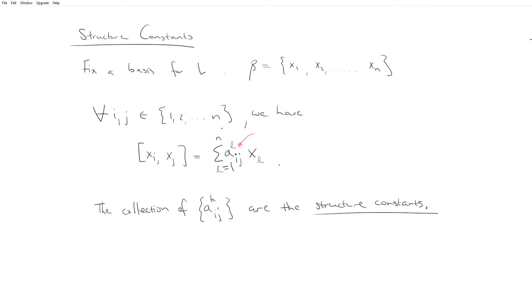So if we have a Lie Algebra L, then we can fix a basis for it, say beta equals x1, x2, dot dot dot, xn.